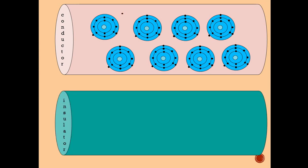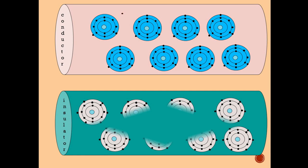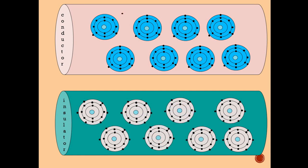Consider an insulator — for example, sulfur. In atoms of an insulator, electrons are tightly bound to the nucleus; they are not free to move inside the insulator. Therefore, when an external electric field is applied to the insulator, current conduction cannot take place because there is no large number of free electrons inside the insulator, and therefore they are poor conductors.